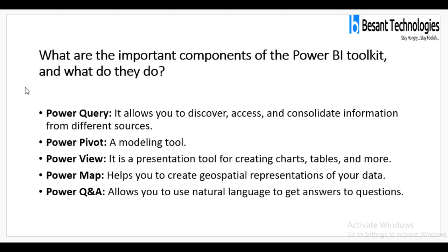What are the important components of the Power BI Toolkit and what do they do? The important components are Power Query, Power Pivot, Power View, Power Map, and Power Q&A. Power Query allows you to discover, access, and consolidate information from different sources. Power Pivot is a modeling tool. Power View is a representation tool for creating charts, tables, and more. Power Map helps you create geospatial representations of your data. Power Q&A allows you to use natural language to get answers to your questions.